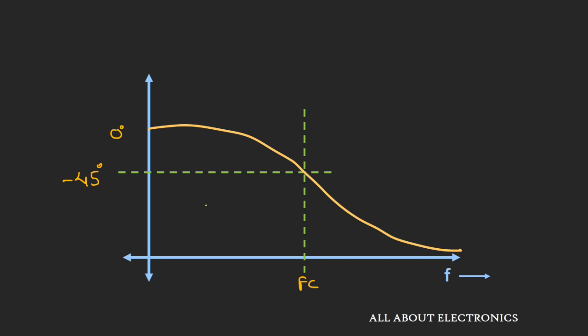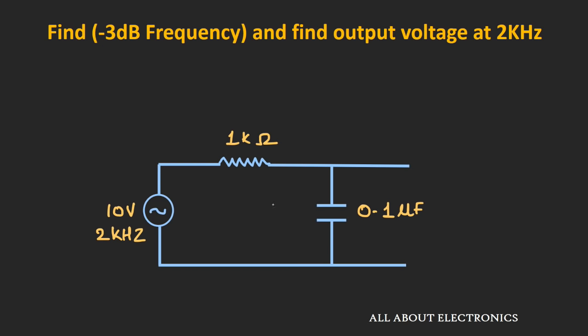Now let's take an example based on this low-pass filter. We have been given a low-pass filter and asked to find the -3 dB frequency and the output voltage for a given input signal. A 10V sinusoidal signal at 2 kHz is applied at the input. First, let's find the cutoff frequency: fc = 1/(2πRC). Substituting the values of R and C, we get a cutoff frequency of 1.59 kHz.